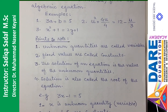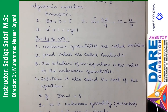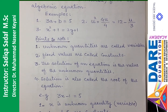Number 2 eham baat — fixed values are called constants. Inmein woh values jo fixed hain, yaani jo value humein pata hain, jo value apna aap batati hai, woh constant kahlati hai. Jaise pehle wale mein 5 hai, doosri example mein 12 hai, teesri example mein 1 hai.